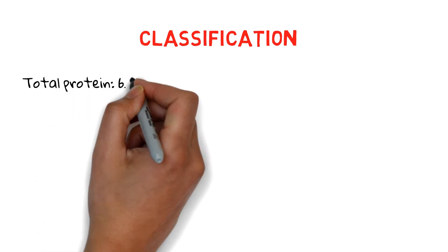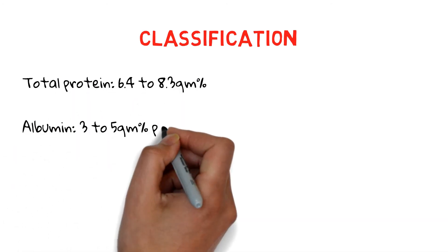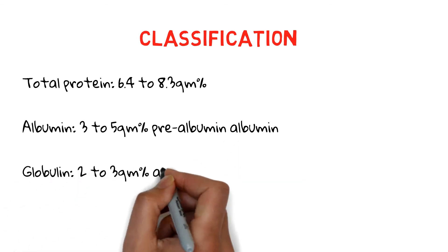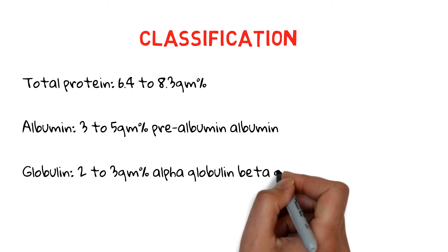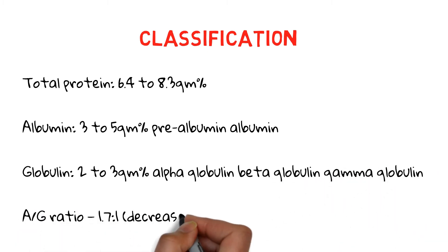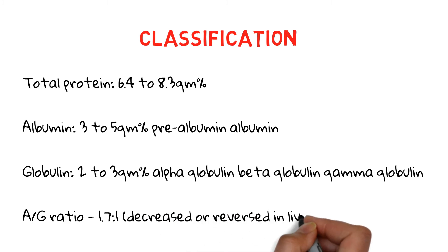Now its classification. The total protein is 6.4 to 8.3 grams, albumin is 3 to 5 grams, globulin is 2 to 3 grams. The albumin-globulin ratio is the ratio between plasma levels of albumin and globulin, and it is an important indicator of some diseases involving the liver or kidney. The normal A/G ratio is 2:1; an A/G ratio of 1.7 to 1 is decreased or reversed in liver disease.